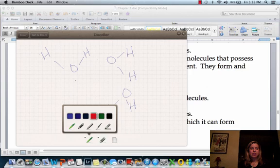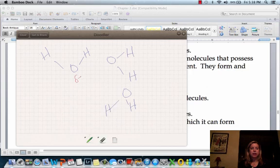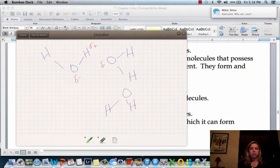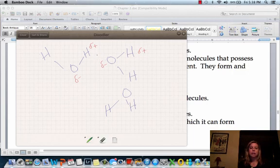Remember we said that oxygen has a partial negative charge and hydrogen has a partial positive charge. So what's going to happen is, as we've talked about before, opposites attract. This is going to be attracted to this, and it's going to form this little temporary bond. That's called a hydrogen bond. The same thing is going to happen with this hydrogen and this oxygen here, and so on and so on.